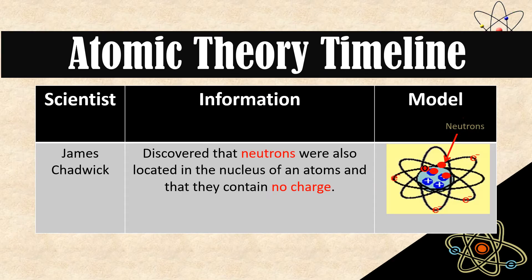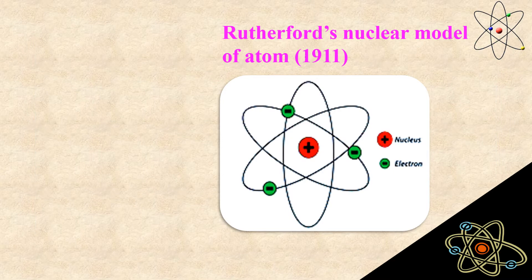Next scientist was James Chadwick. He discovered the neutrons. Neutrons are located in the nucleus of an atom and they contain no charge — neither negative nor positive. So remember: N for neutron, N for no charge.